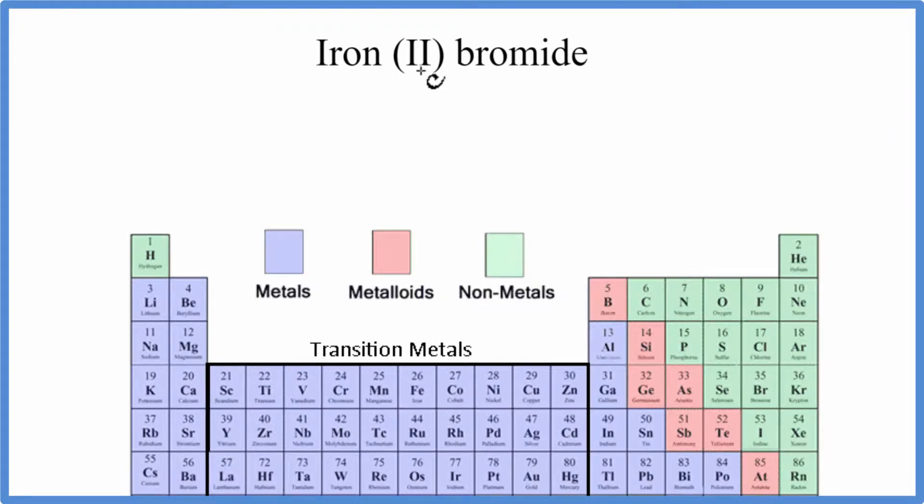To write the formula for iron (II) bromide, we go to the periodic table. We see iron, that's Fe, and bromide, that's bromine, is Br.